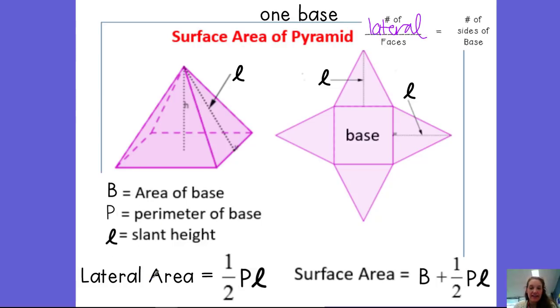The formula for finding the lateral surface area is one-half times P, which is still the perimeter of the base. So you'd add up all the sides of the base.